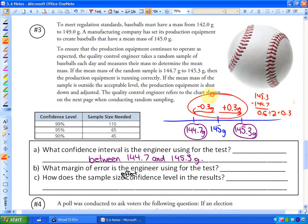So as far as your margin of error, it would be plus or minus 0.3 grams from the mean. So the margin of error is plus or minus 0.3 grams from the mean.